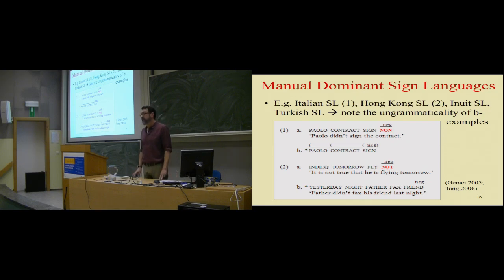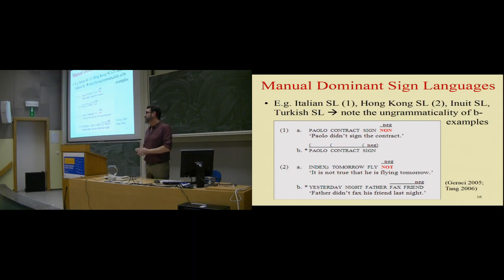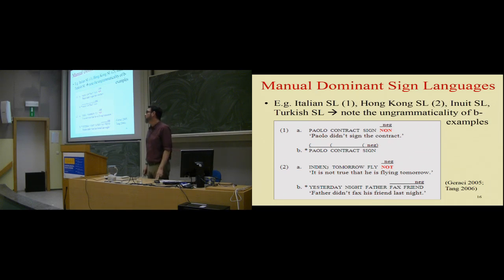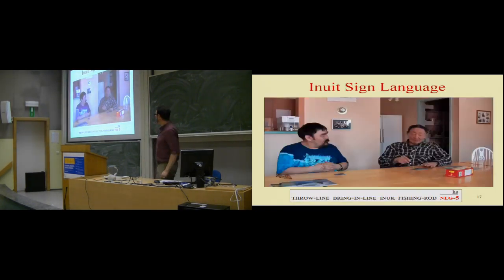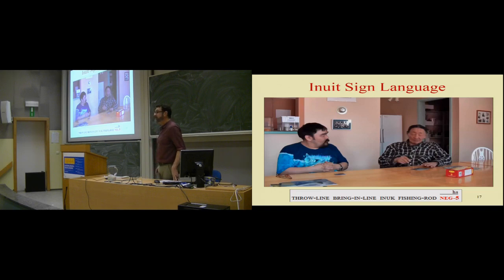Those were the manual dominant sign languages. The existence of manual dominant sign languages probably makes you suspect that there are also non-manual dominant sign languages — and indeed, in many sign languages it is possible and even common to negate a clause by only a head shake. Examples include German sign language, American sign language, Indo-Pakistani sign language, New Zealand sign language, and Flemish sign language. These sign languages do have negative particles, but the use of the particle is optional.